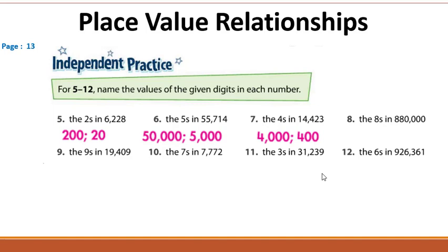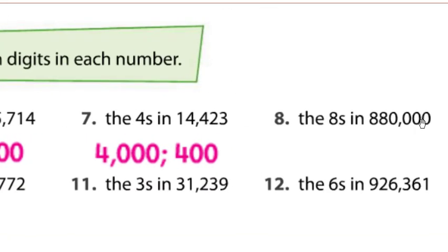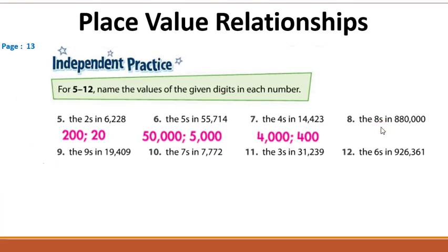For question eight, Al-Hussein answered: the first eight has a value of 800,000 — hundred is two zeros and thousand is three zeros. The second eight has a value of 80,000 — eighty means ten thousand, so ten is one zero and thousand is three zeros.